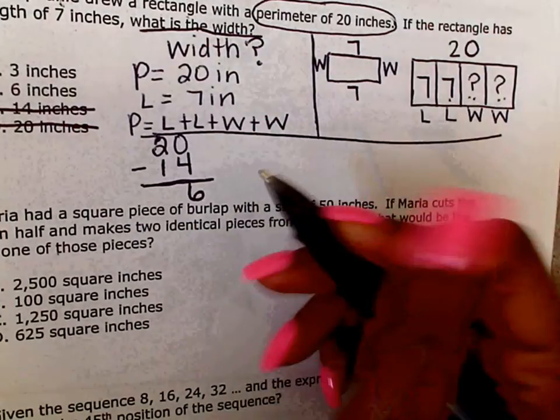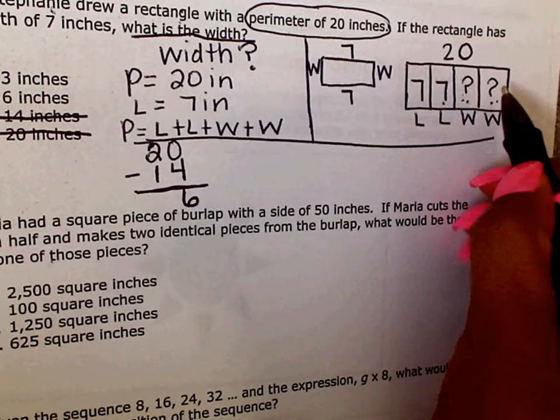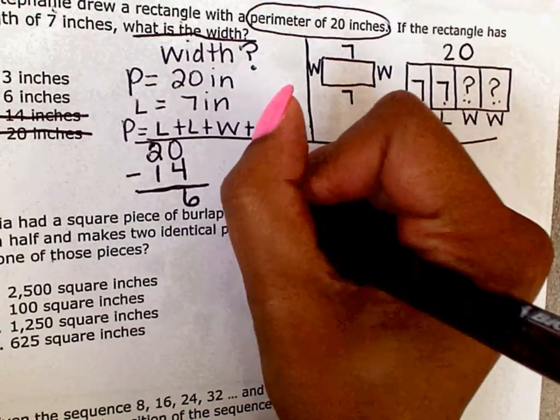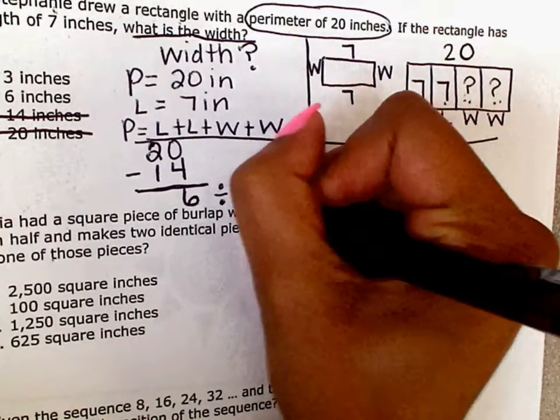Okay, so once I have 6, and I'm going to put 6 in each box. Is that the width? No, I have 2 boxes, and I have 6 here. I'm going to need to divide it by 2. And then what do I have? 3.